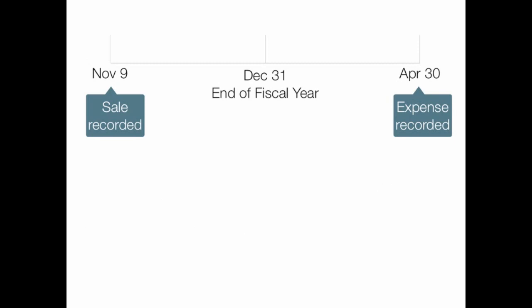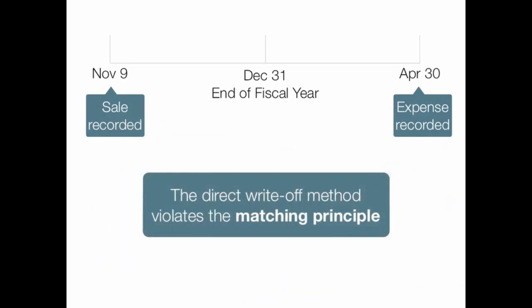Similar to the diagram from the prior part under the allowance method — let's say we made our sale on November 9th. Under the direct write-off method, we would not make an adjustment at the end of the fiscal year. We would expense this when we determined a specific account to be uncollectible. Looking at this timeline, you should see that this violates the matching principle: we recorded the revenue on November 9th of one year but didn't expense the uncollectible account until the next year.